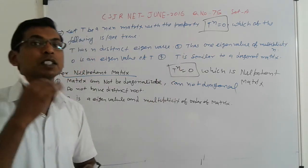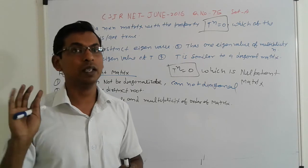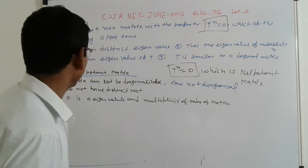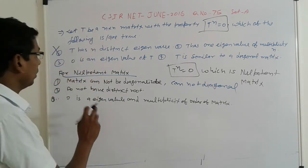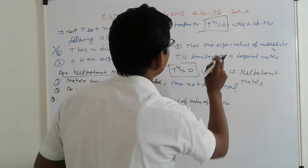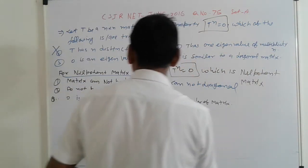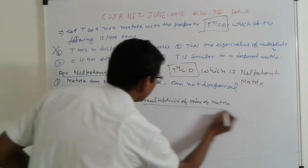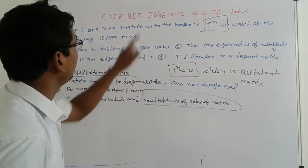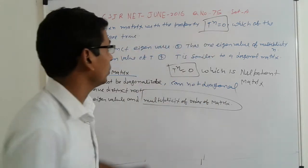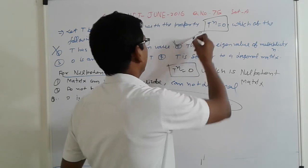So nilpotent means null matrix, that case we get only 0 eigenvalue. Now come to, first is wrong. Next, T has one eigenvalue of multiplicity n, that is here. Multiplicity of order of this, or T has n cross n order, so that case here, this is correct.